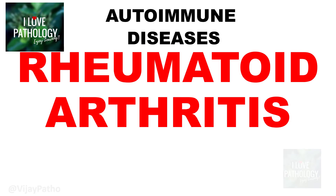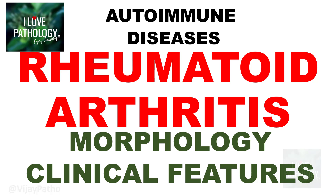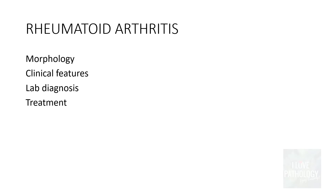In continuation with the autoimmune diseases, we were discussing about rheumatoid arthritis. In my earlier session, I talked about the etiopathogenesis of rheumatoid arthritis. Now it's time to learn the morphology and clinical features of rheumatoid arthritis. We will also look into the lab diagnosis and treatment aspects of rheumatoid arthritis.